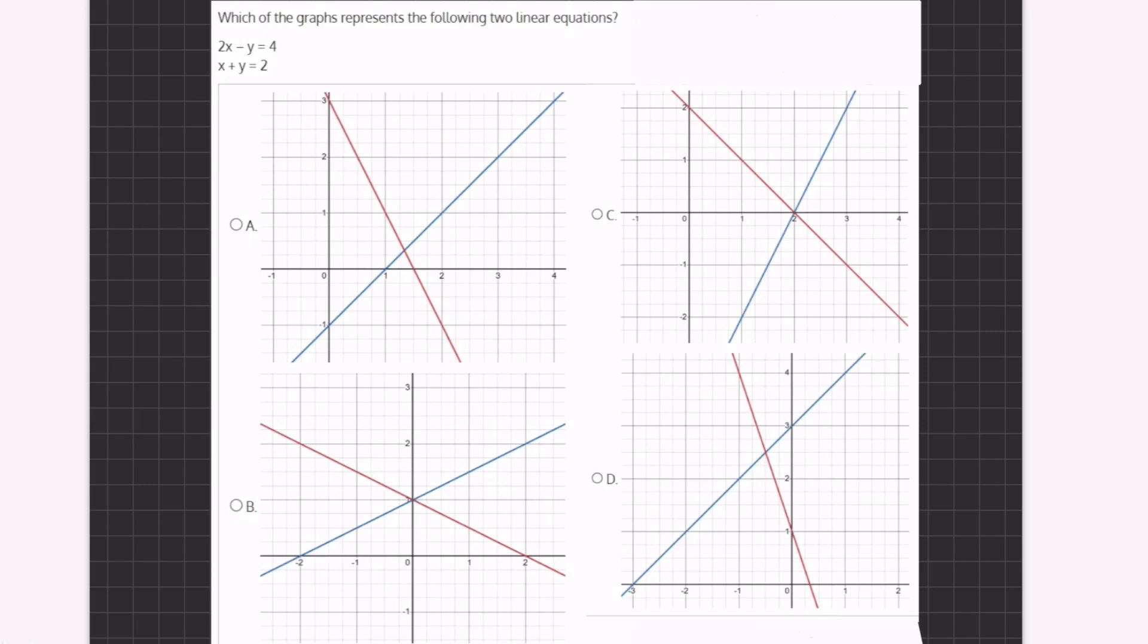All right, so in this problem we want to find which of the following graphs that are given to us represent the two linear equations that are given. All right, now in order to do so, the first step that would make it easiest to understand the graphs would be to turn both of the equations into point slope form, which is y equals mx plus c.